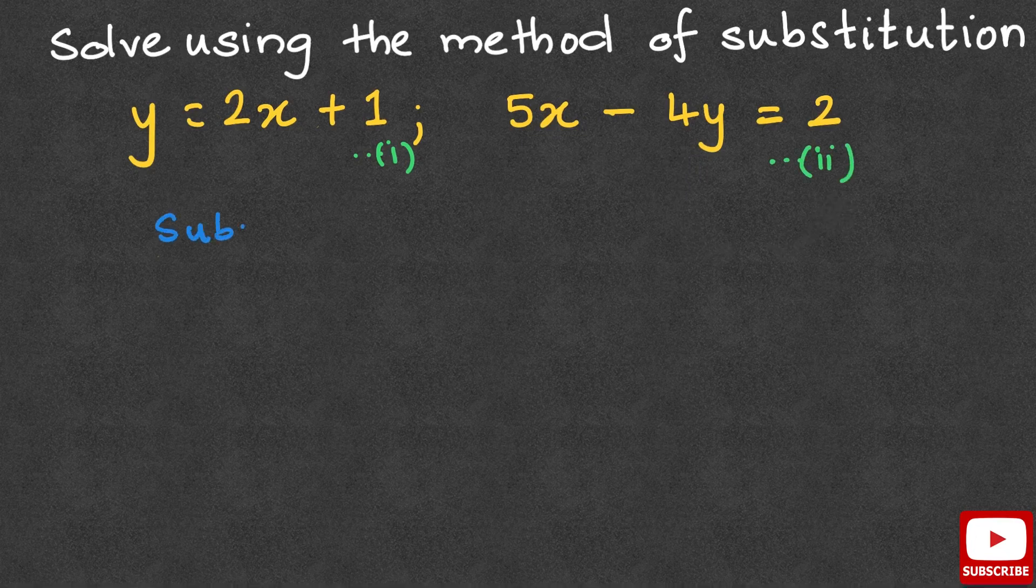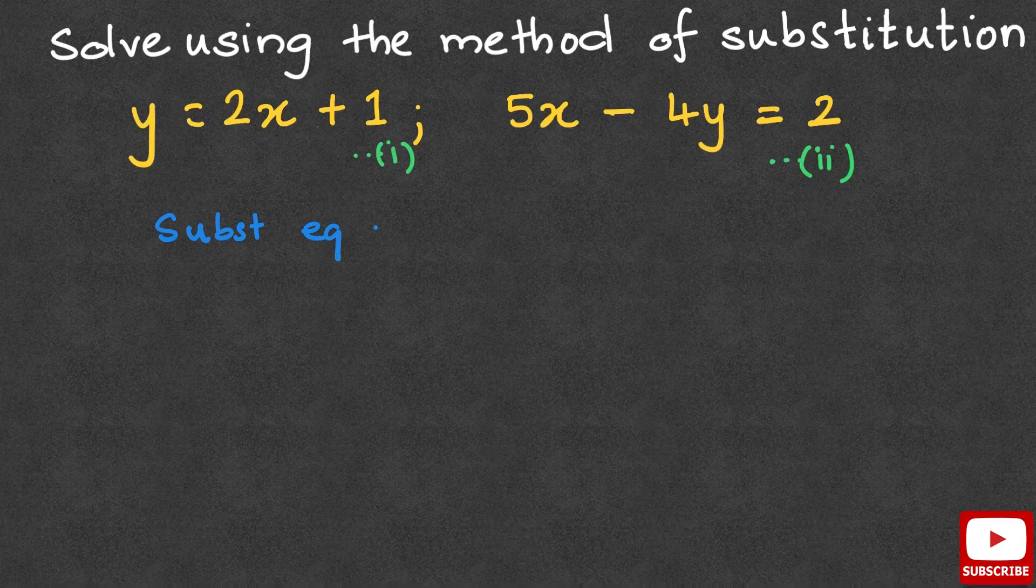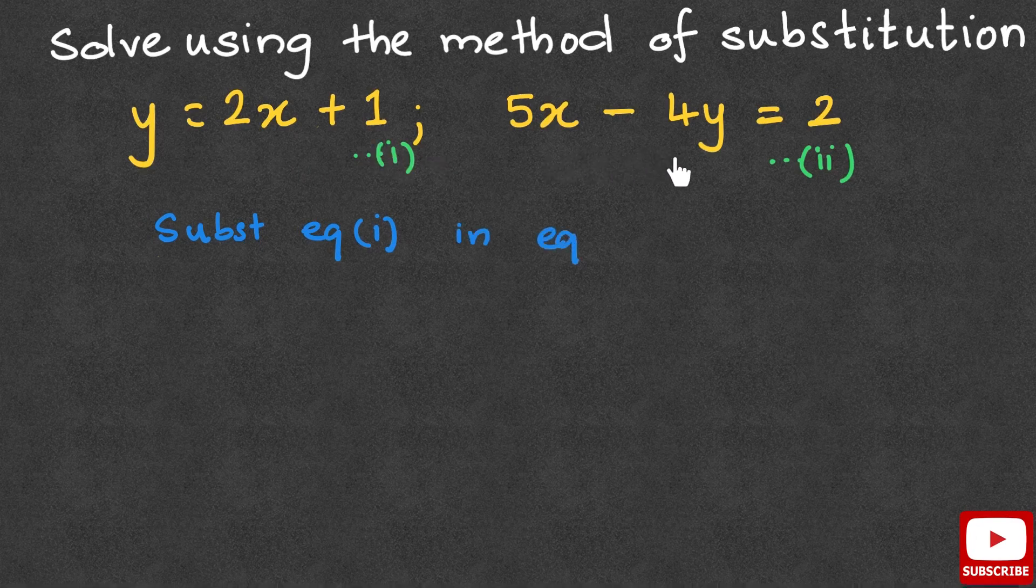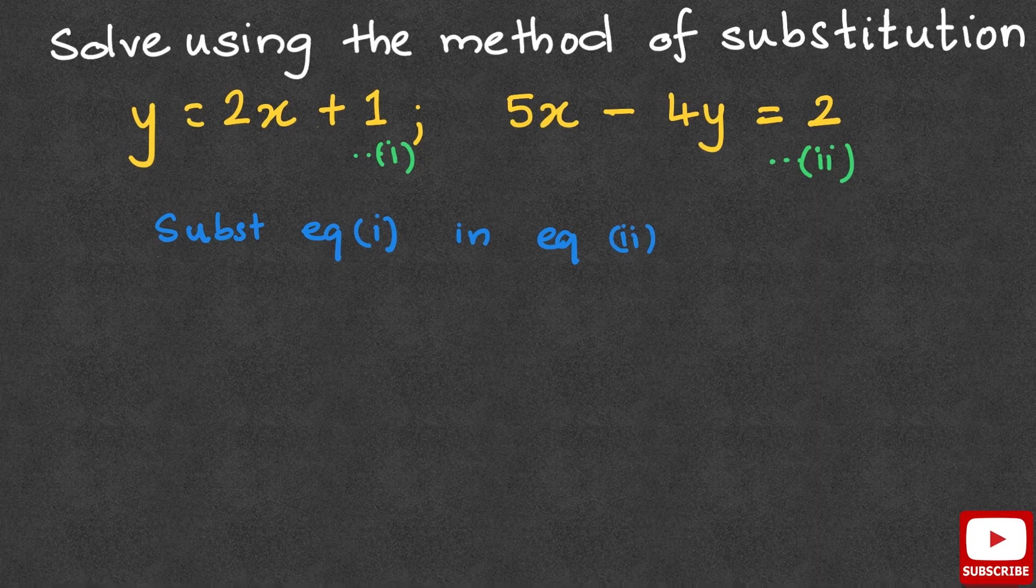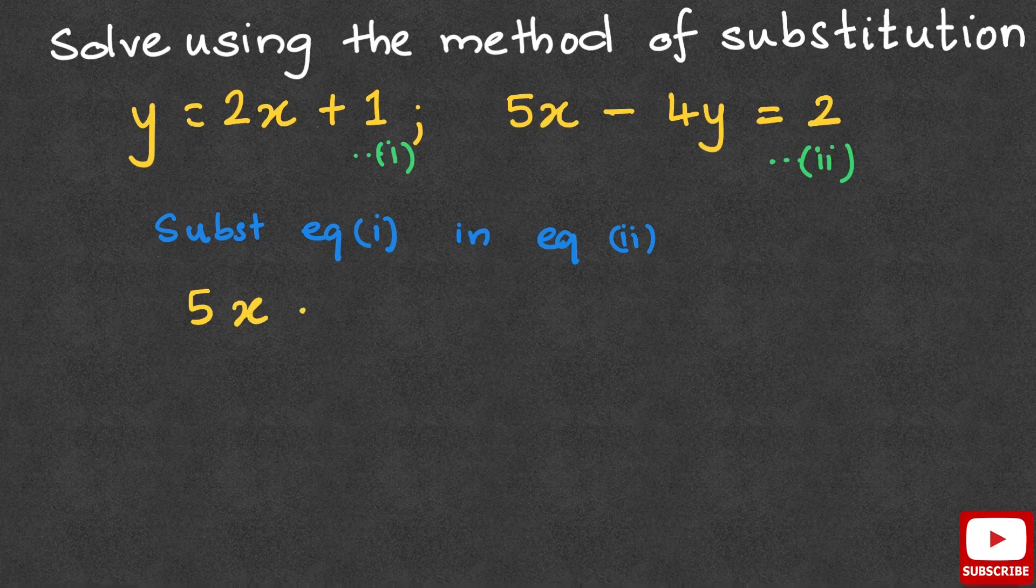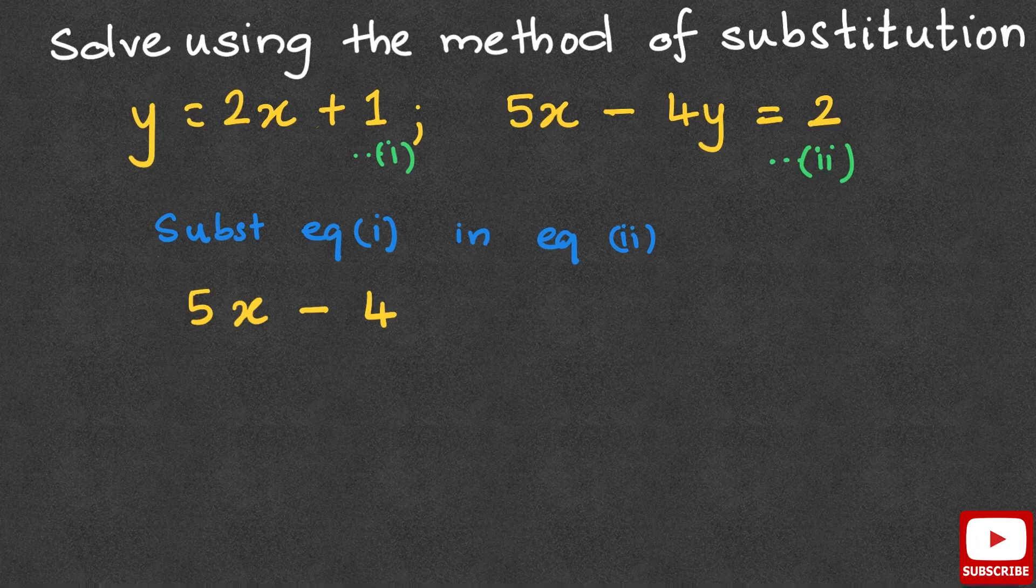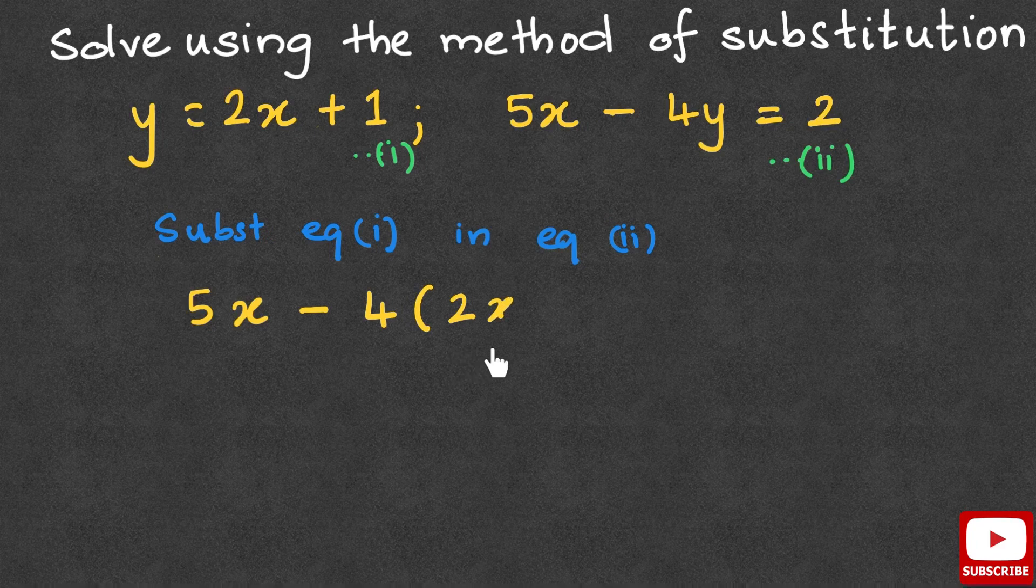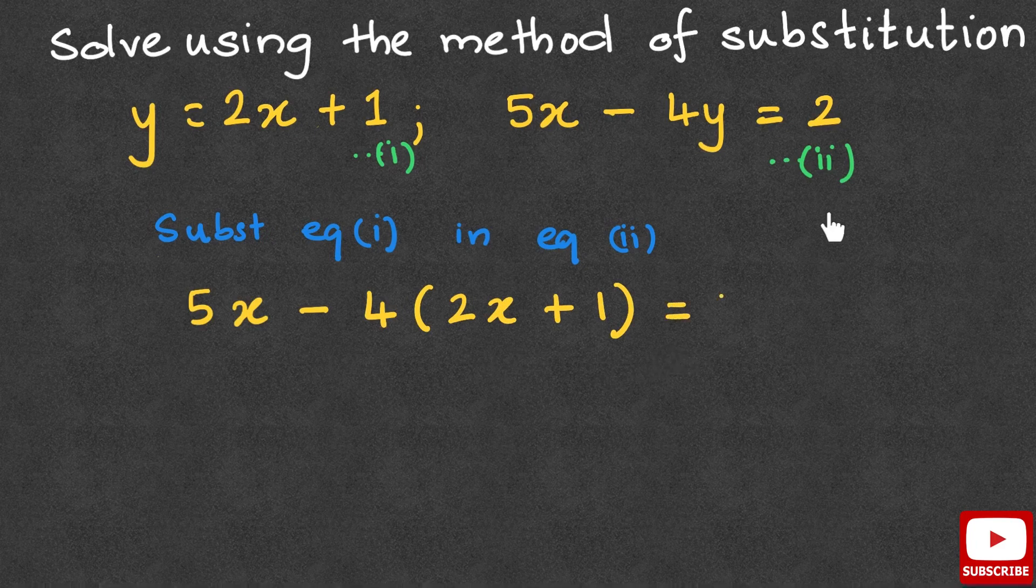To begin with, we substitute equation 1, which is y equals 2x plus 1, in equation 2. So we write 5x minus 4, and now instead of y, we substitute equation 1. So open brackets 2x plus 1, close brackets, and that is equal to 2.